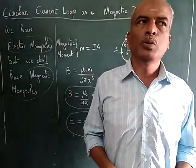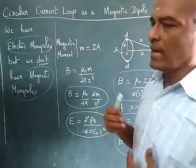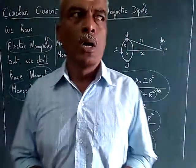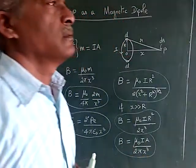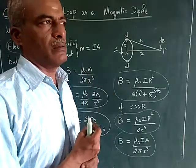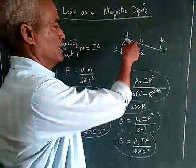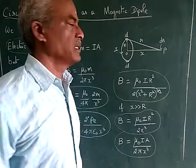Hello viewers, today we are going to see about circular current loop as a magnetic dipole. Already we have seen the derivation of a magnetic field because of a current carrying wire. This derivation we have seen in the earlier videos.